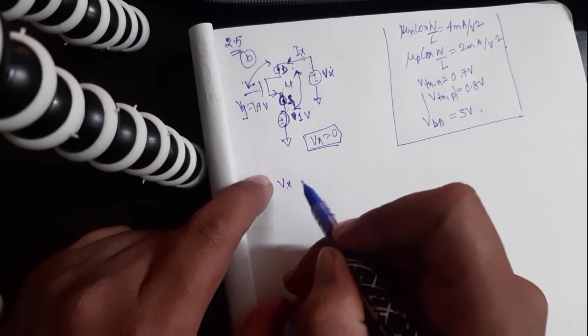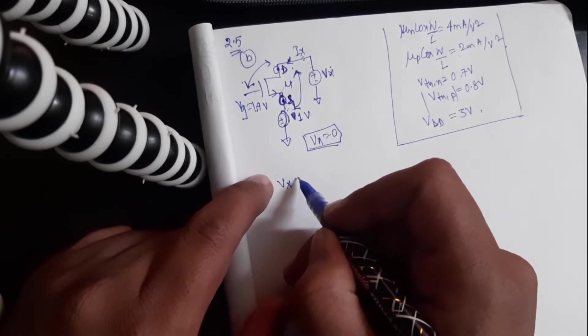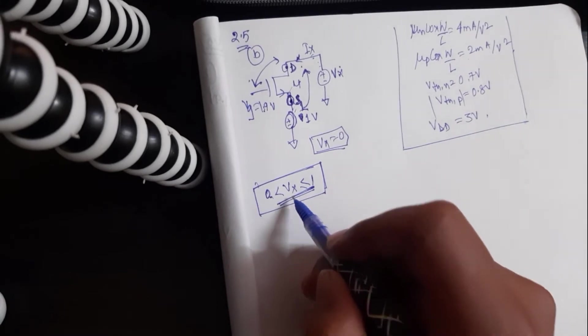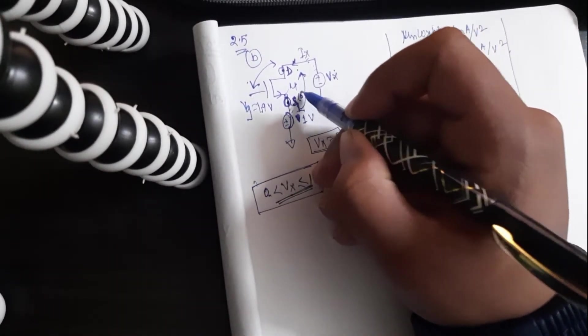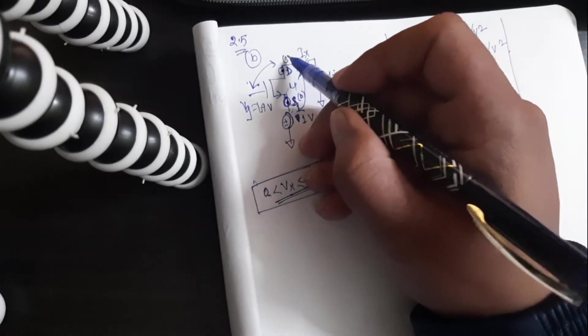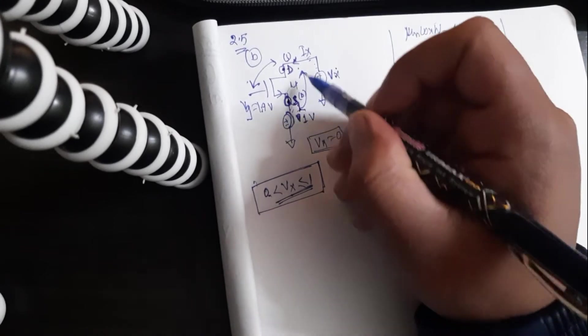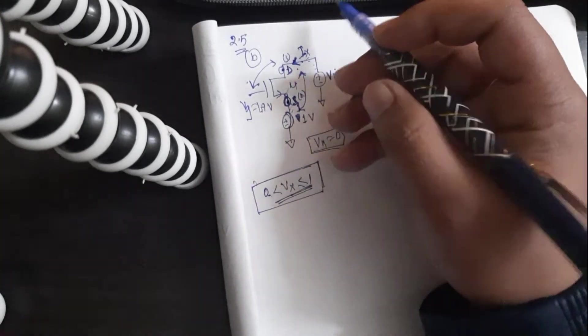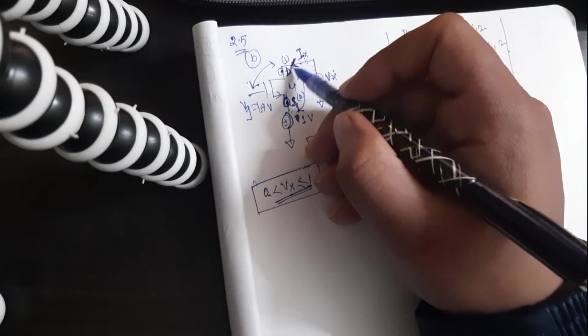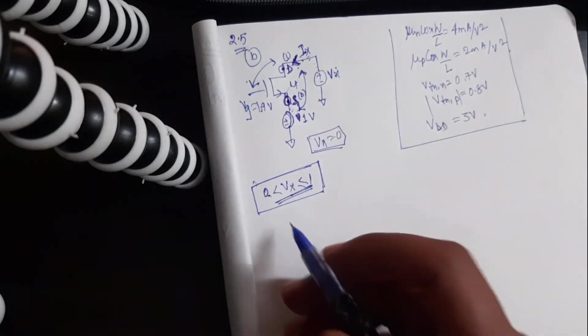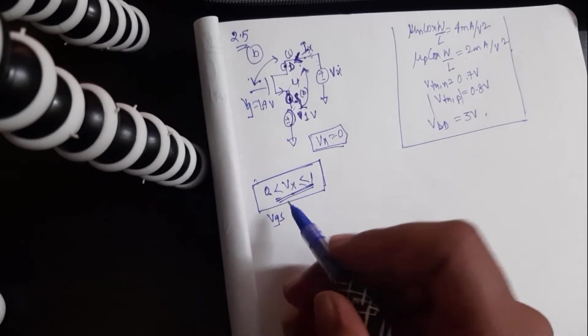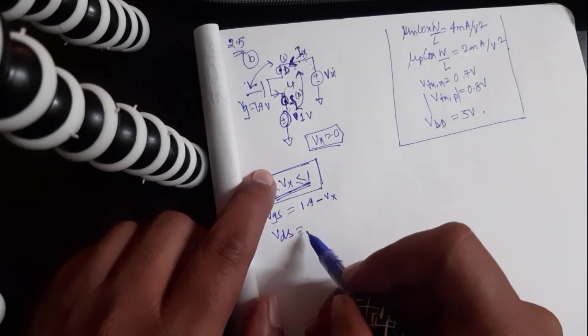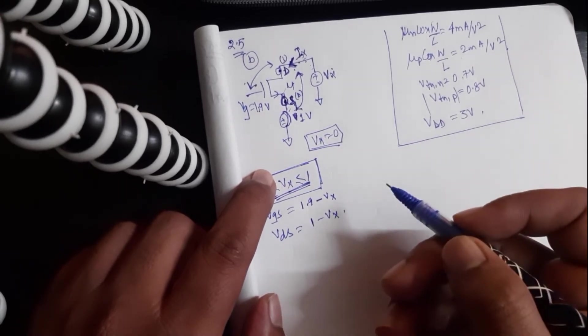So let us consider the case when Vx is between 1 and 0. So this is the voltage during which this node will be a drain and this node will be the source. And the current will flow from this node to this node. And Ix will be a negative term, just because we have considered the direction of Ix to be from right to left. So let us find out Vgs. Vgs should be 1.9 minus Vx. Vds is 1 minus Vx.